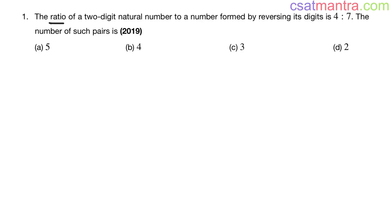The ratio of a two-digit natural number to a number formed by reversing its digits is 4 is to 7. The number of such pairs is. This question is from number system chapter based on decimal system. It is asked in 2019.